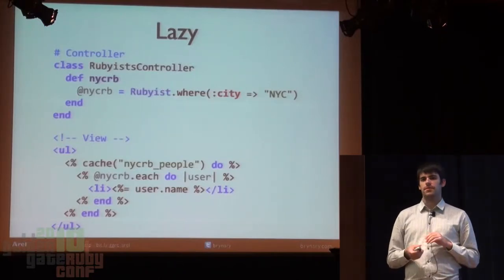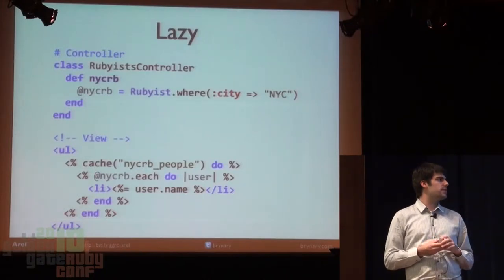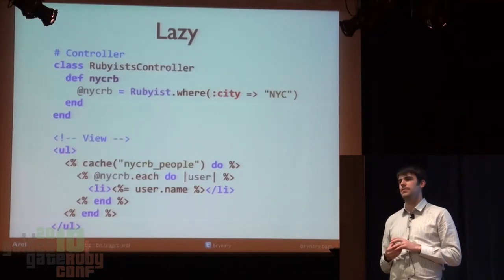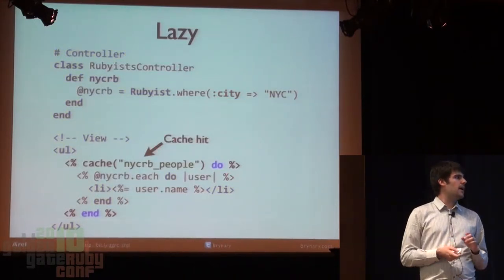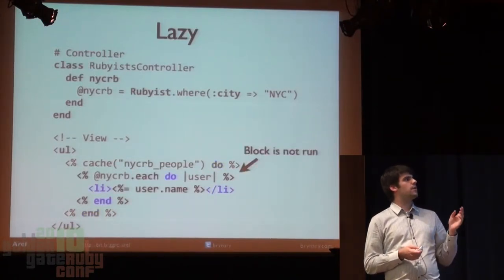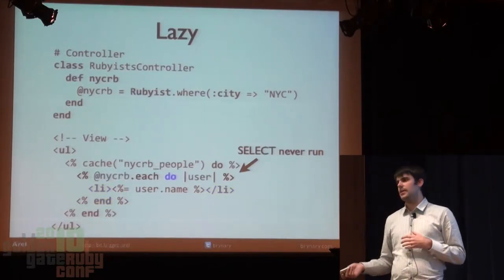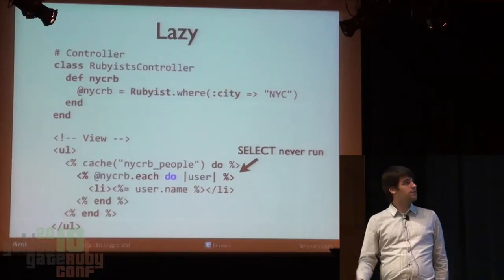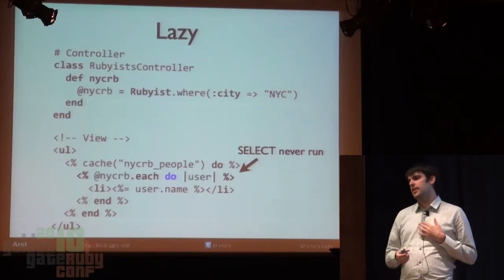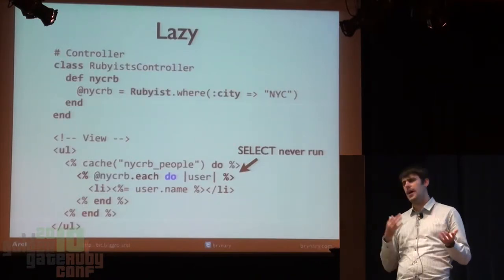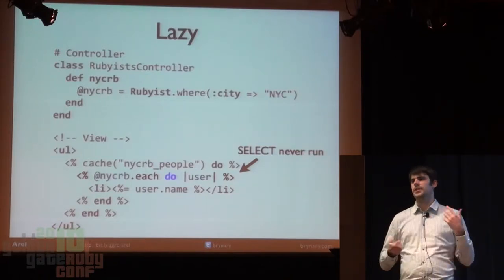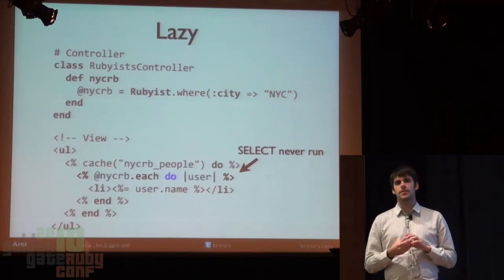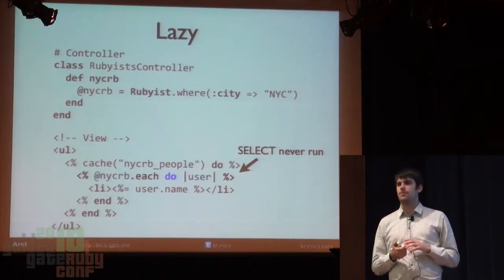In Rails 2 there wasn't really a problem, but what if it takes a long time to generate each list item? You might use a fragment cache — an idiomatic Rails way to improve page latency. In Rails 2, at cache hit time, the block doesn't run, but the query will have already executed in the controller. In Rails 3 with Active Record 3 built on AREL, the SELECT never happens because .each never gets called. So you don't have to deal with situations where you've added fragment caches but your queries are still executing — you get that optimization for free with Active Record 3.